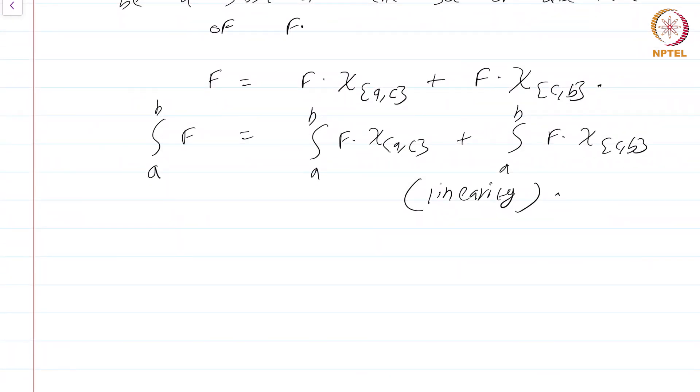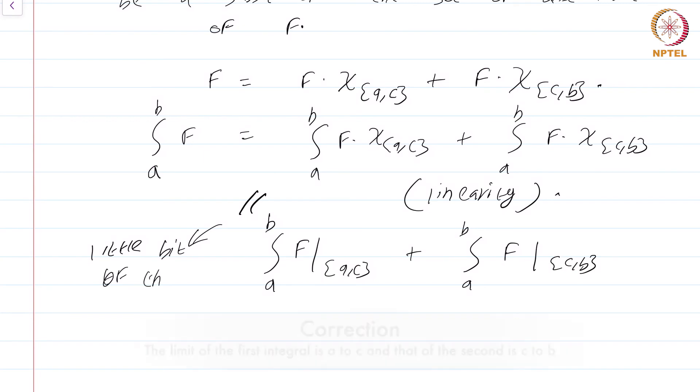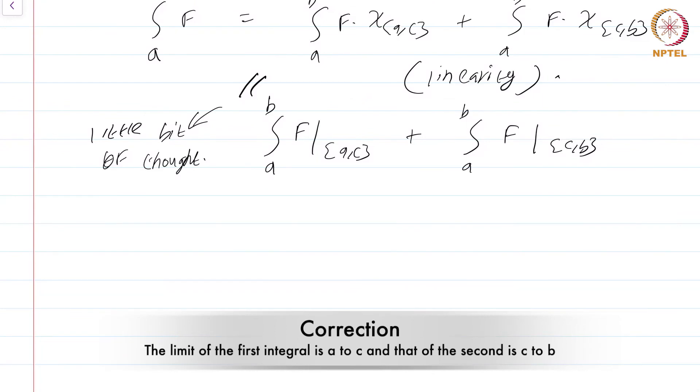Now the little bit of thought part comes now. This is nothing but integral from a to b of f restricted to [a,c] plus integral from a to b of f restricted to [c,b]. So this is the part that requires little bit of thought. When I say little bit, I really mean little bit of thought.